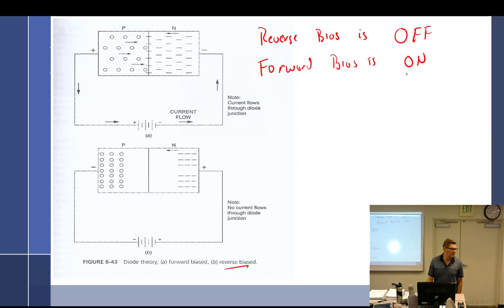Looking at the reverse bias in the off position, we have the junction which creates the depletion zone. Why is it the depletion zone? Because it's been depleted. In reference to the polarity of the power source, each side wants to separate.